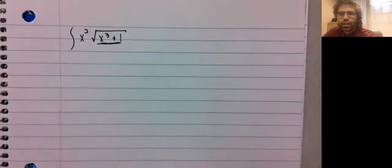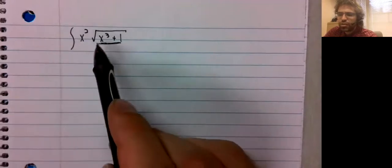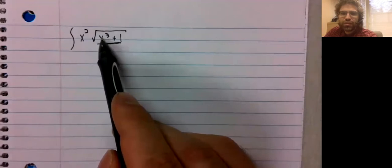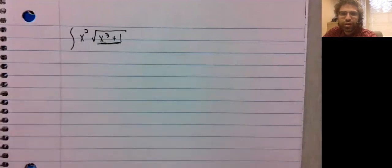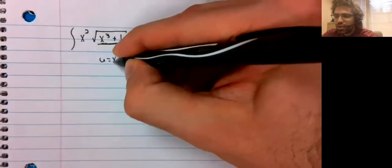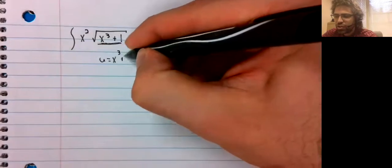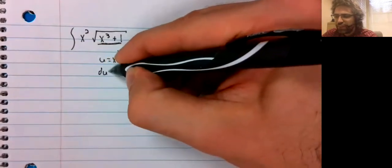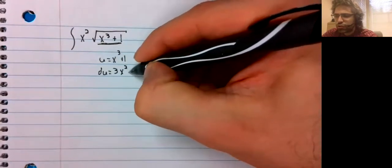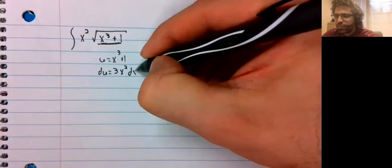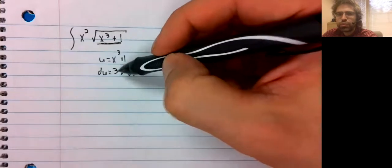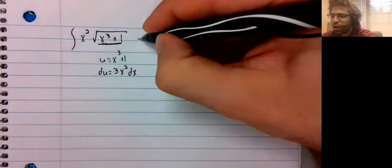And you have more or less the derivative of this inside function. If we let U be the inside function, we don't quite have the derivative. But we've got the x squared and as long as we're only off by a constant.